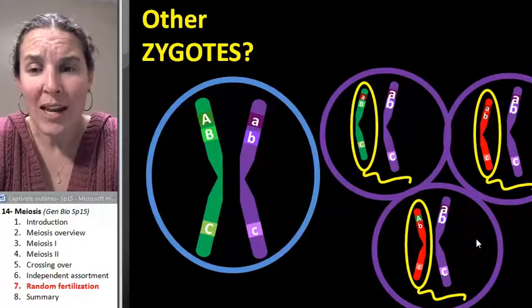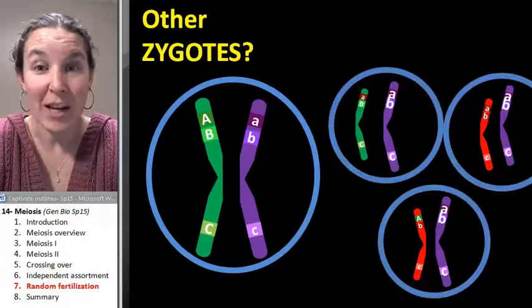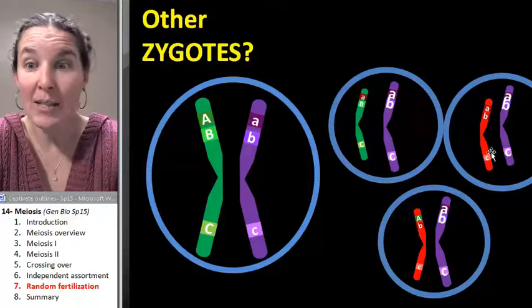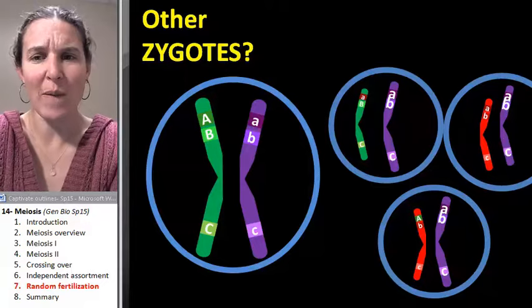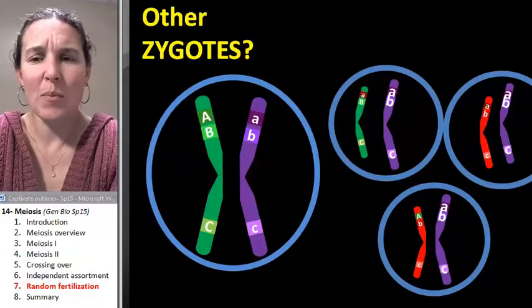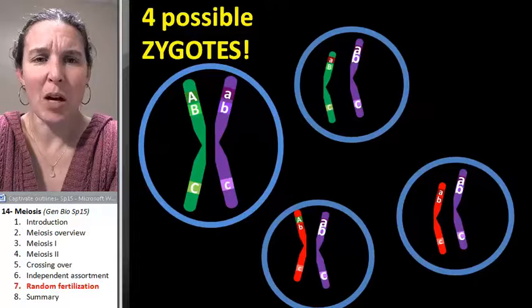check that out, we're going to end up with different zygotes. Here are all my possible zygotes from just four possible sperm and four possible eggs. It really is kind of mind boggling.